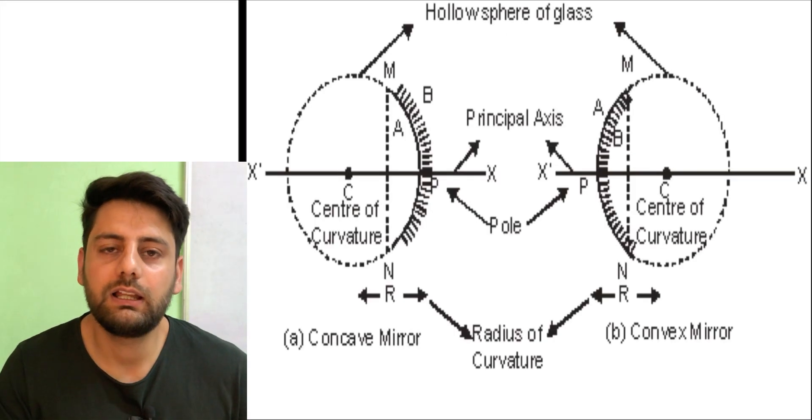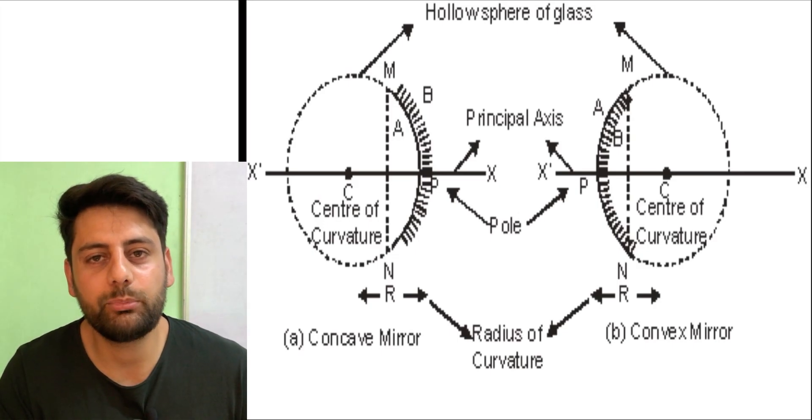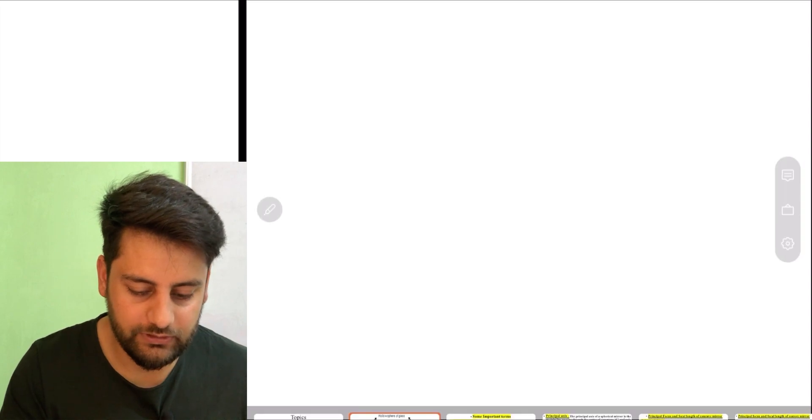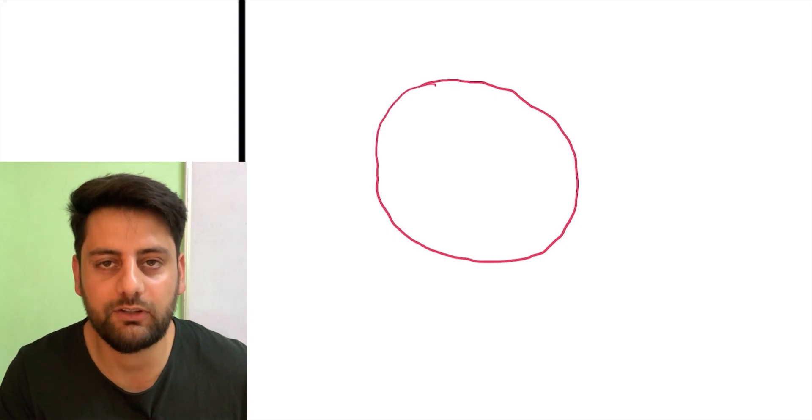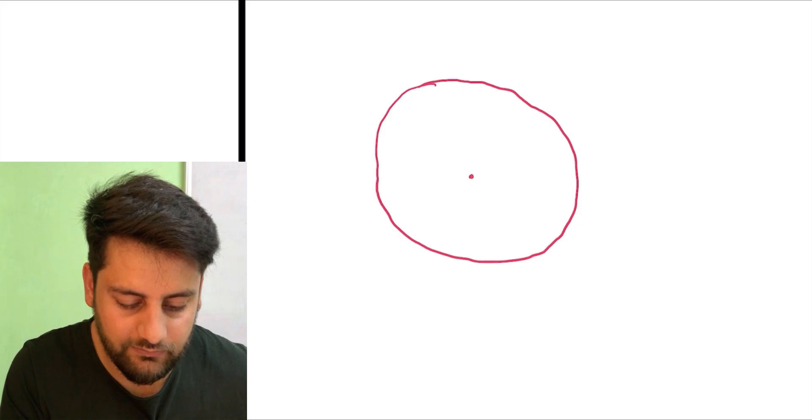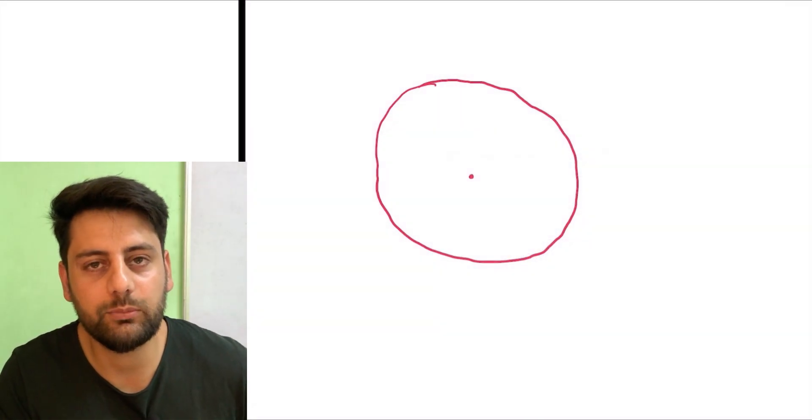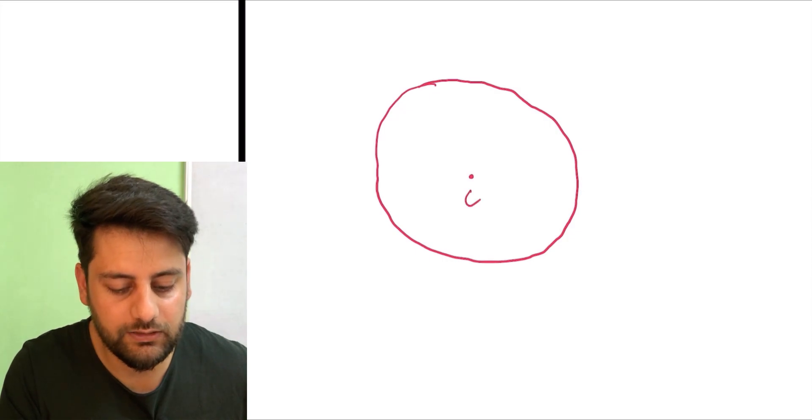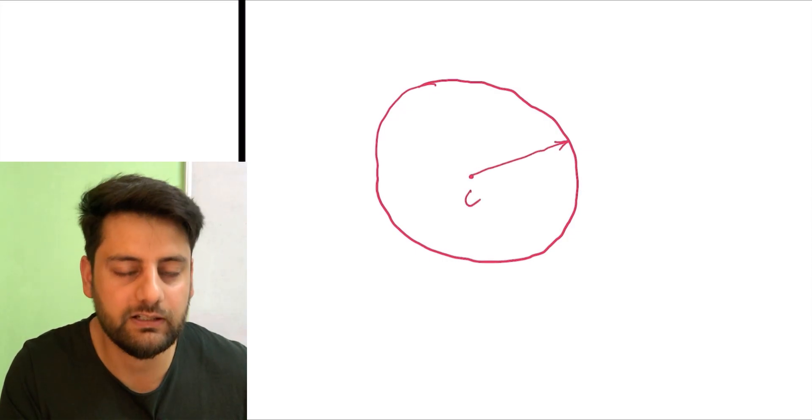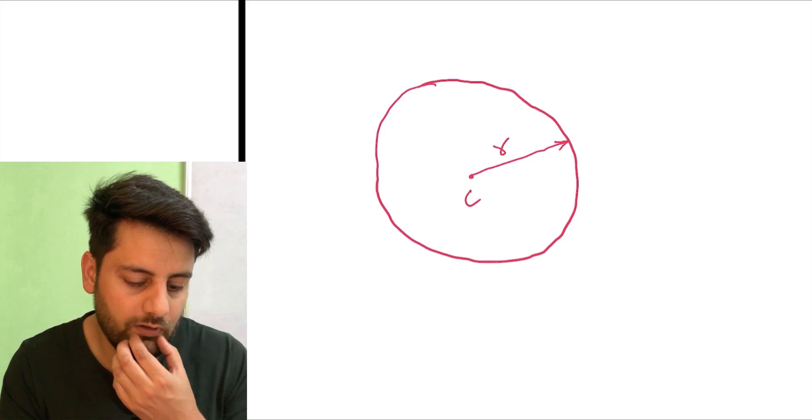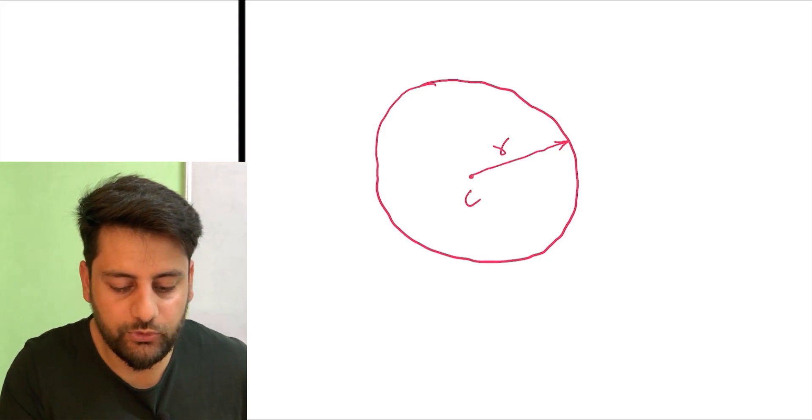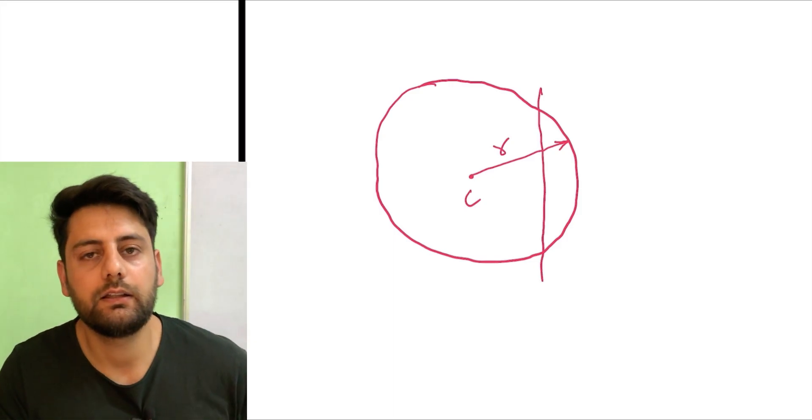First of all, let us have a look at a simple diagram for example of spherical mirror. Let us suppose we have this sphere. We already discussed this in the previous lecture. If we have a sphere, obviously we will have a center of the sphere. And if this is the center, to obviously center se leke is circumference tak distance hogi, we call that radius of curvature. To suppose main ek part cut kar raha hon is sphere ka.